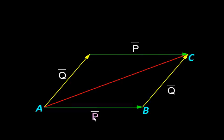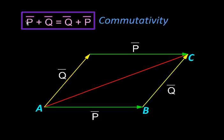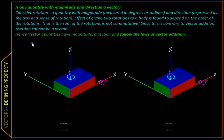To summarize, if we have two vectors p bar and q bar, then we may add them in this order p bar plus q bar, or that order q bar plus p bar. We get the same result, so p bar plus q bar is equal to q bar plus p bar. This property is called commutativity.